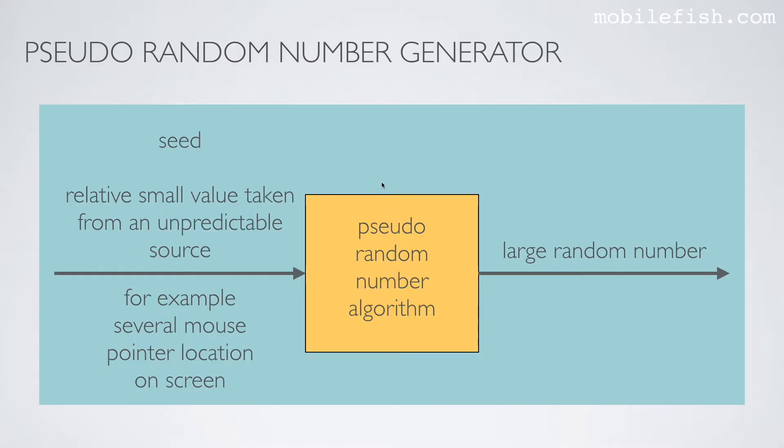How does a pseudo-random number generator work? In the middle you see the pseudo-random number algorithm which uses the seed as its input and it generates a large random number.